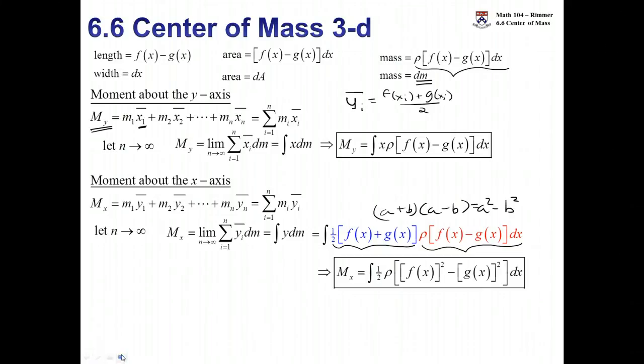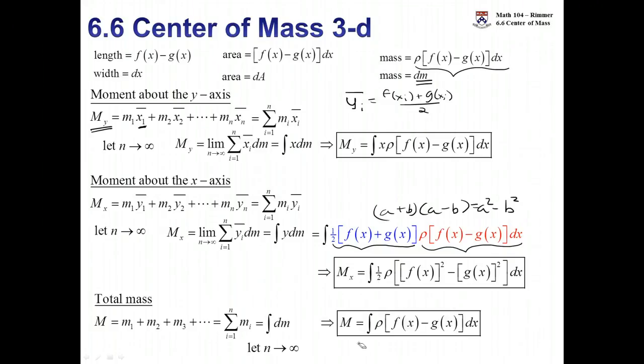And then finally, we have total mass, would be just the sum of the masses. If there's infinitely many of them, then it's going to be an integration of dm, and remember what dm is, it's the mass, and so that's how we're going to find total mass. These formulas will help us get our center of mass.